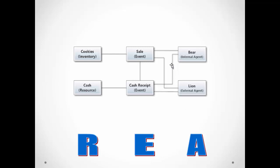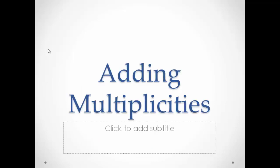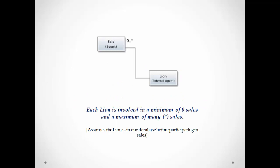Notice the associations. We have the internal agent participating in both of the events, and the external agent participating in both of the events. The inventory decreases as a result of the sale event, and the cash resource increases as a result of the cash receipt event. So we have the classes and the associations, and we need to add the multiplicities to our diagram.